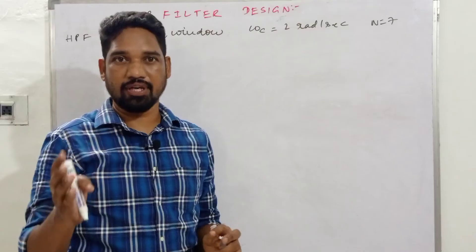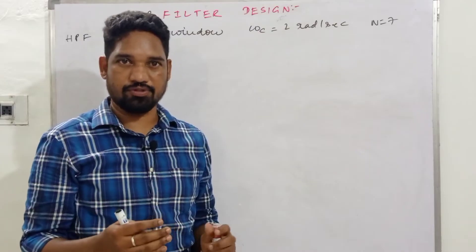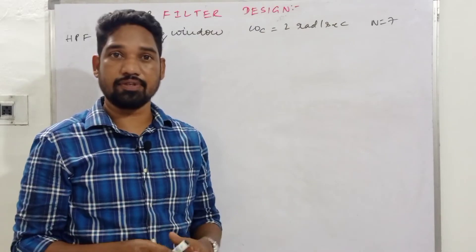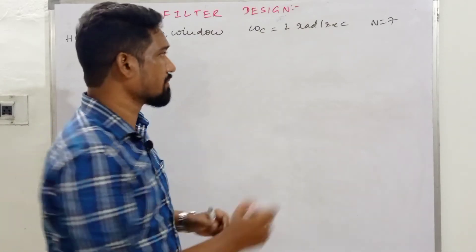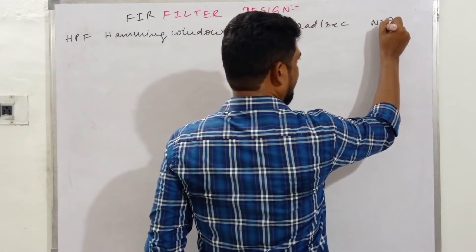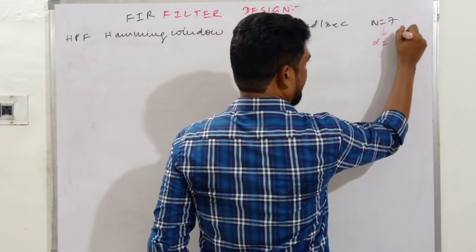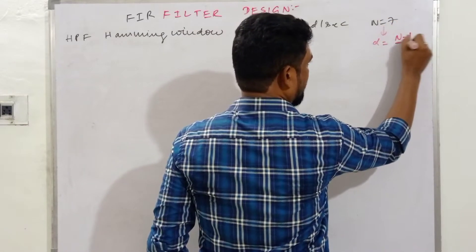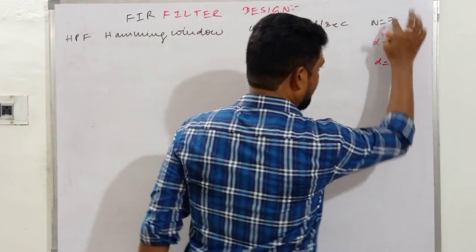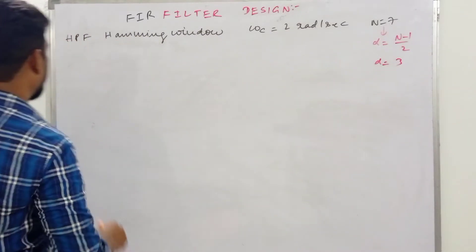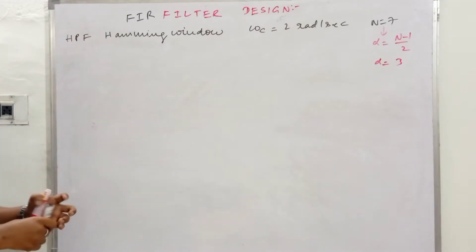Before starting the design, we need some prior information such as linear phase structure. Given N = 7, we compute alpha = (N − 1) / 2 = 3. This value of alpha is important and must be remembered.